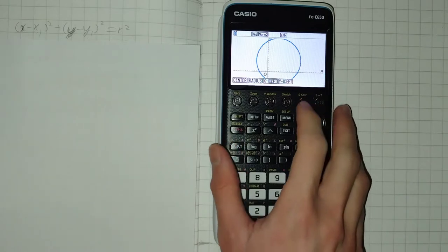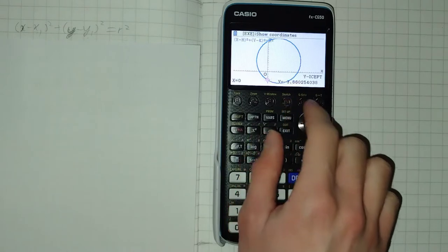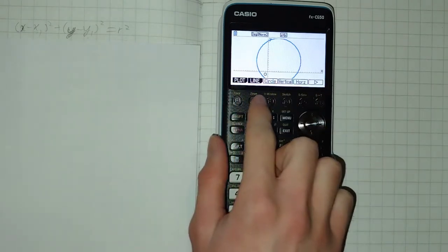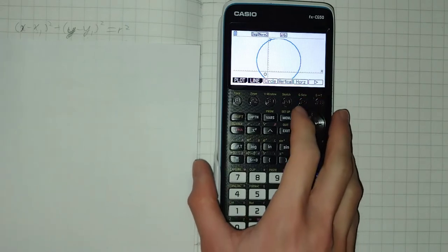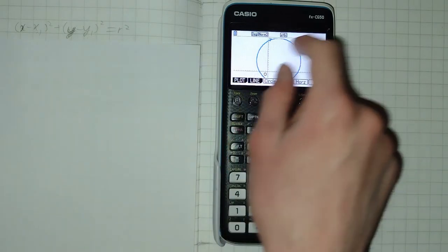The problem is we can't then sketch another line very easily. So we couldn't for example find the intersect between a straight line and the circle.